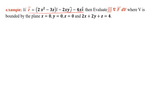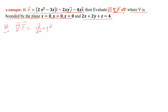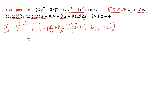Now we evaluate the triple integral of del dot F dV, where V is the region bounded by the planes x=0, y=0, z=0, and 2x + 2y + z = 4. First we find del dot F. The del operator is i(∂/∂x) + j(∂/∂y) + k(∂/∂z), and the vector F is (2x² - 3z)i - 2xy·j - 4x·k.